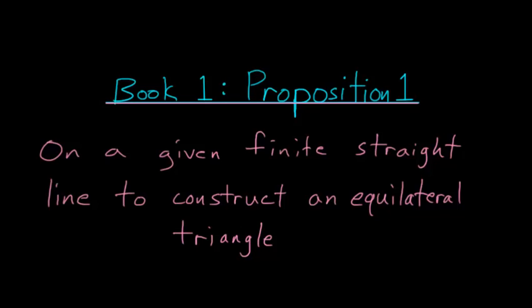Book 1, Proposition 1 of Euclid's Elements focuses on constructing equilateral triangles. So on a given finite straight line to construct an equilateral triangle.